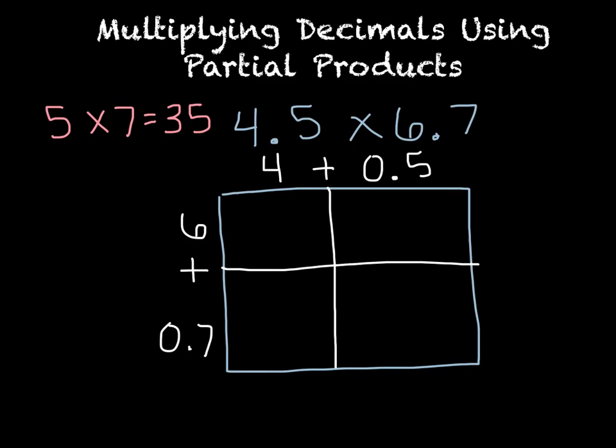Then I'm just going to start multiplying. 6 times 4 is 24. 6 times 0.5 is going to be 3.0. So 30 tenths, but this has to be my tenths place, so it ends up being 3 wholes. A little tricky there. Then I have 4 times 0.7. We know it's a whole number and a tenth, so the answer is going to be a tenth. 4 times 7 is 28, but it's 28 tenths, so it ends up being 2.8. Then my last one, I have a tenth times a tenth, which is a hundredth. 5 times 7 is 35, so I get 0.35.